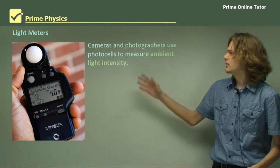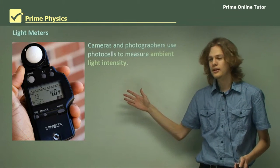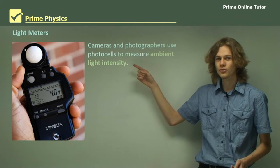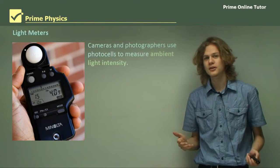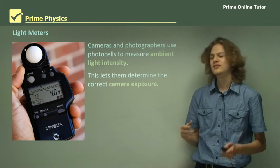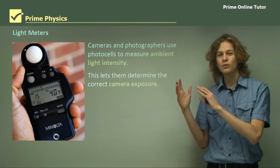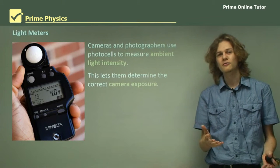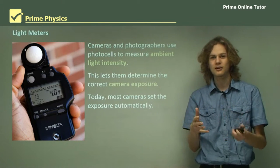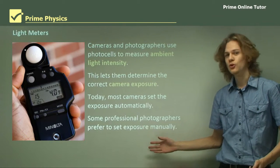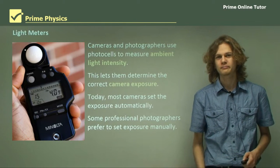Let's talk about some uses. Cameras and photographers use photocells to measure ambient light intensity. We can see a light meter here — it has a little photovoltaic cell right on the top, where the little white circle is. It tells you how intense the ultraviolet light from the sun is, letting photographers determine the correct camera exposure. If you have a very bright light source, you don't need a very long exposure because the camera gets enough light even from a short exposure. Most cameras today set the exposure automatically with a built-in photocell, though some professional photographers prefer to set it manually for greater control.